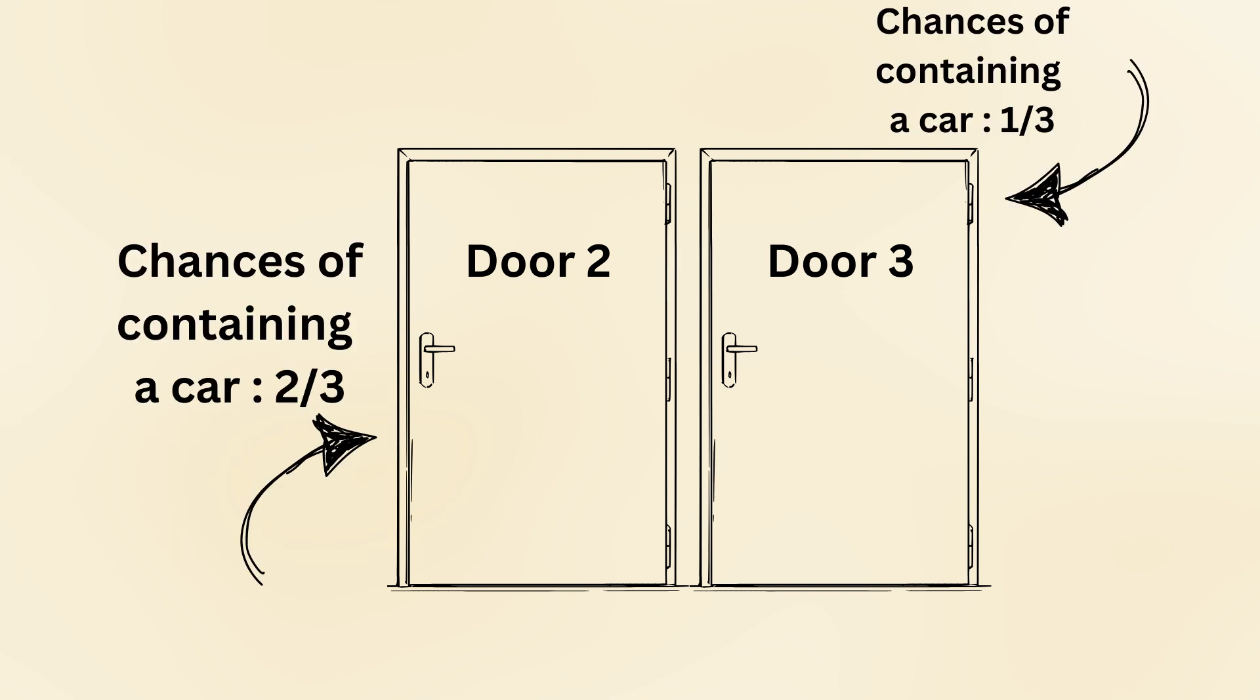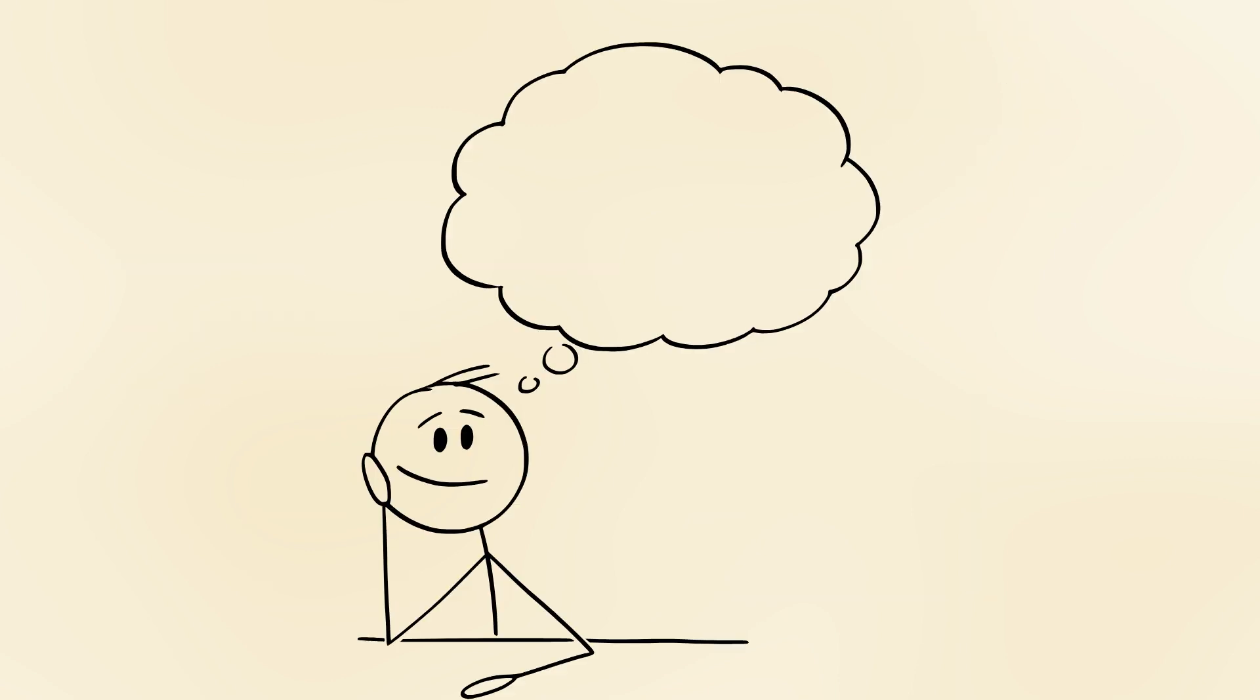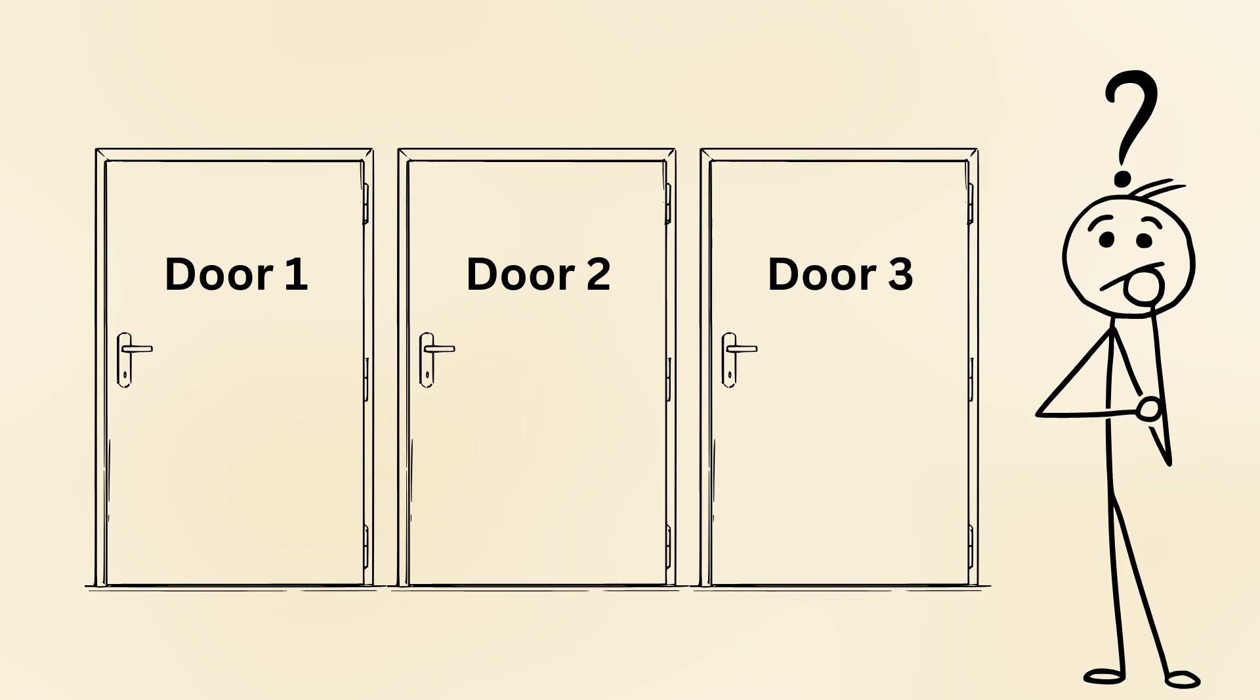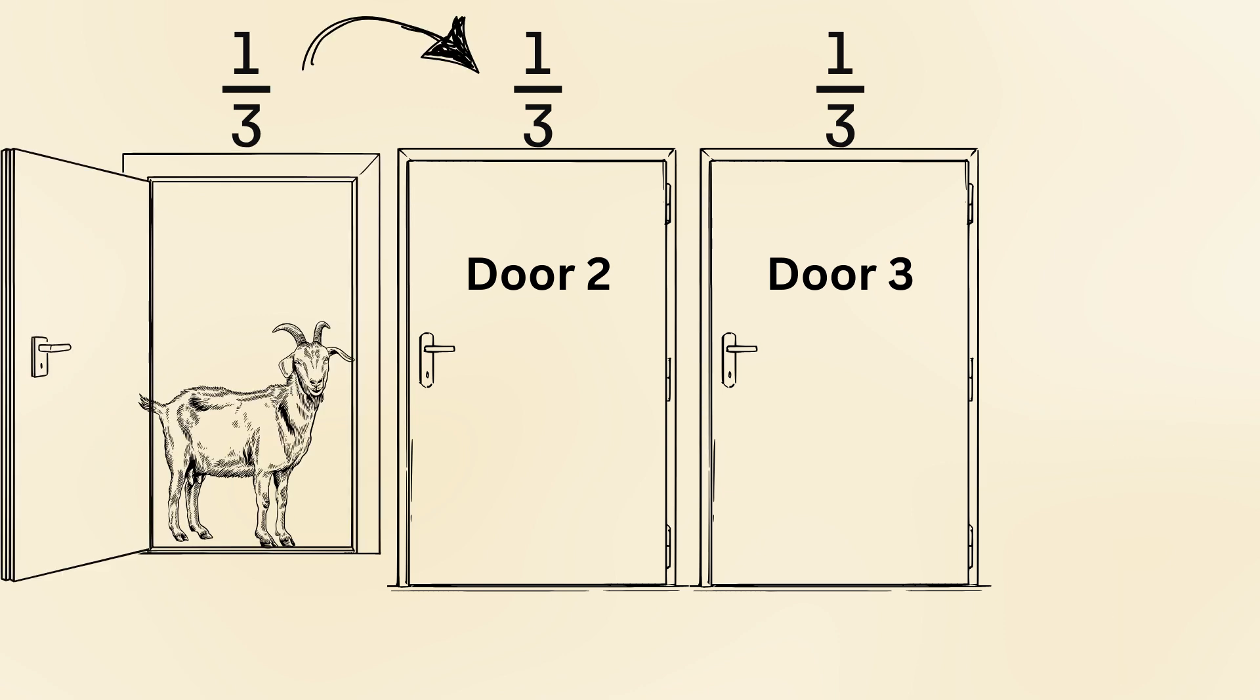Even though it appears that you are choosing between two options, the initial odds still apply. Think of it like this. Before any door is opened, your choice is based on a 1-in-3 chance. When the host opens a door, that chance doesn't vanish. It simply transfers to the remaining door.